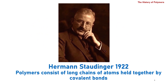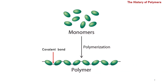It wasn't until Hermann Staudinger proposed in 1922 that polymers consist of long chains of atoms held together by covalent bonds. And even then, his work wasn't accepted until the year 1953, when he was awarded the Nobel Prize.